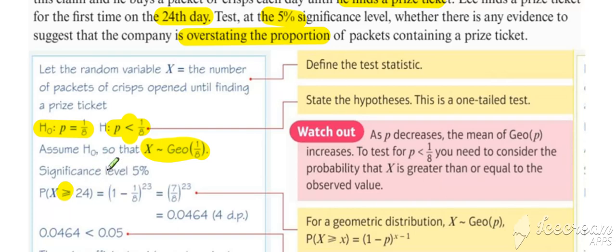For the geometric distribution, because as p increases, the expected value decreases and vice versa.